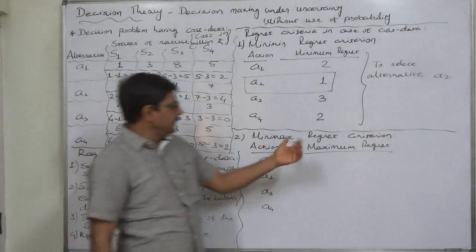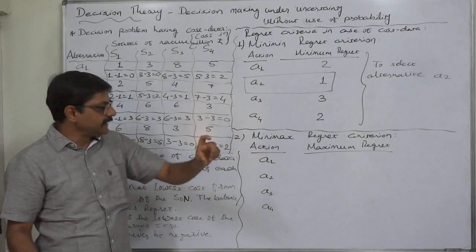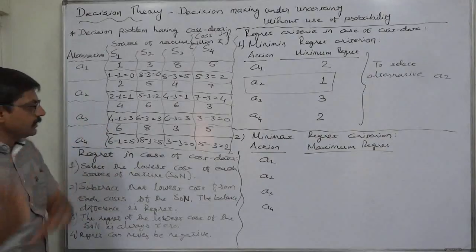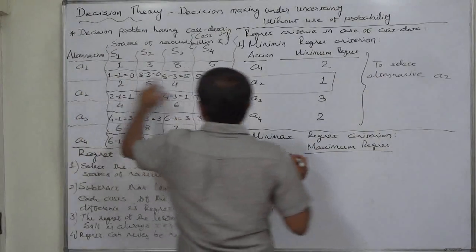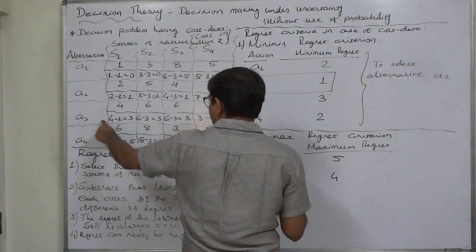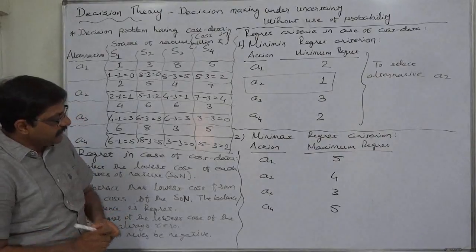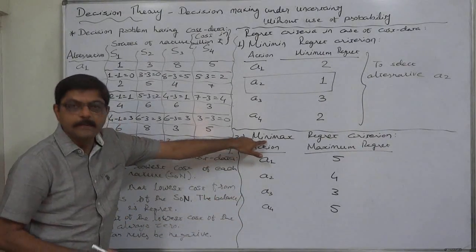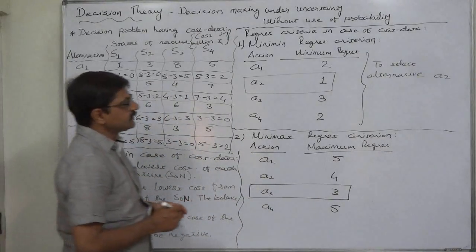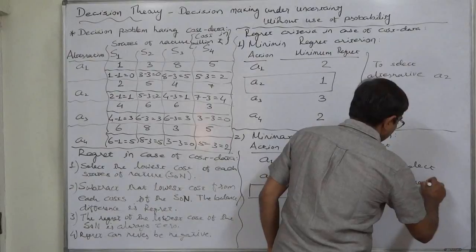The other regret criterion for cost data is the minimax criterion — minimum of the maximum. First, we list the highest regret from each alternative. In case of A1 the highest is 5, A2 the highest is 4, A3 the highest is 3, and A4 the highest is 5. From these maximum regrets we select the minimum, which is 3 for A3. The minimax regret criterion suggests that the decision-maker should select alternative A3.